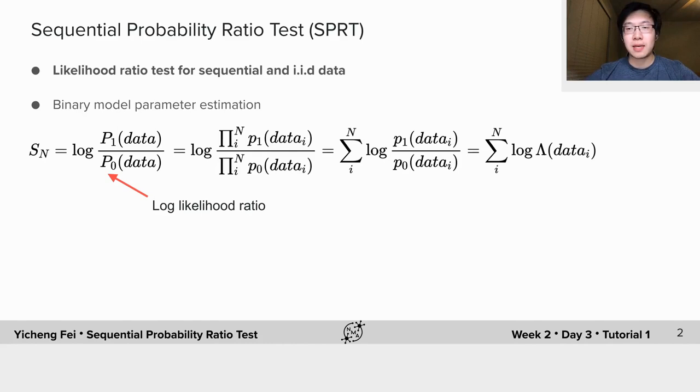If the dataset is composed of independent and identically distributed samples, we can further factorize the likelihood function and write Sn as the summation of individual log likelihood ratios.